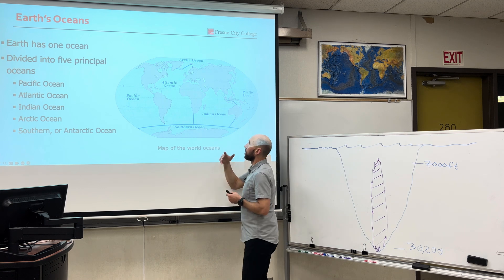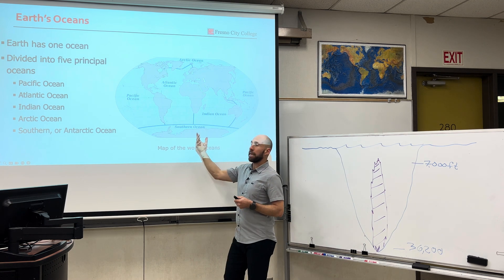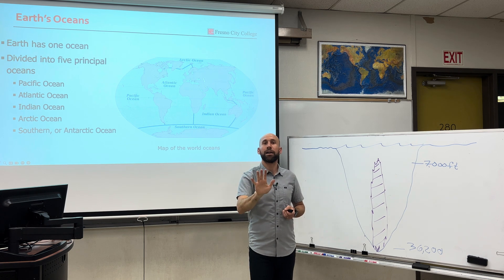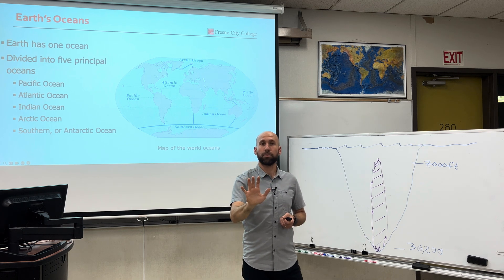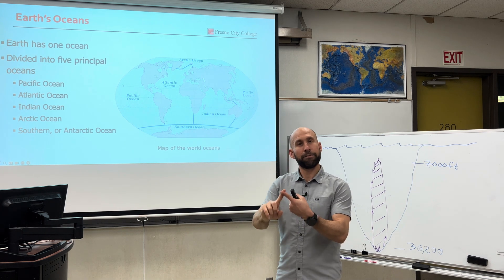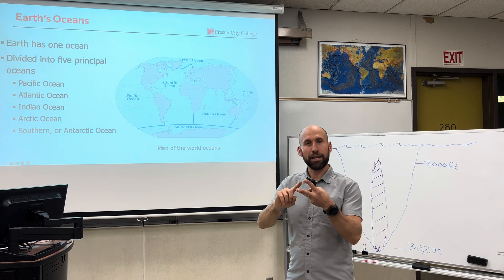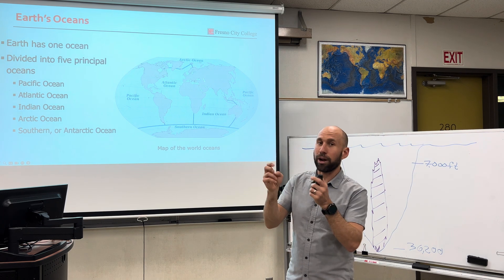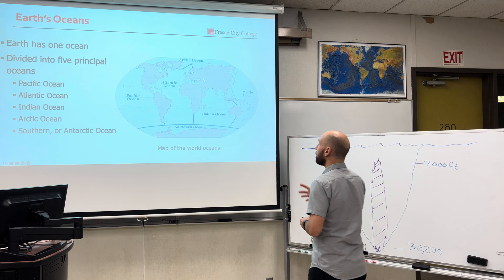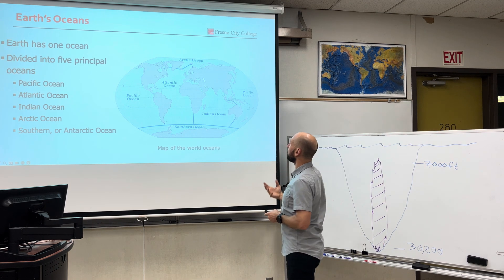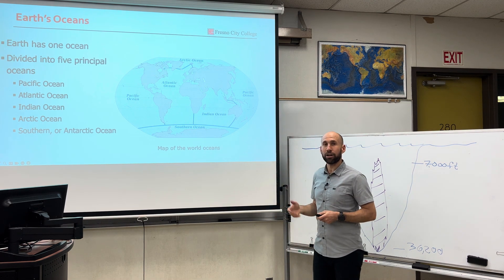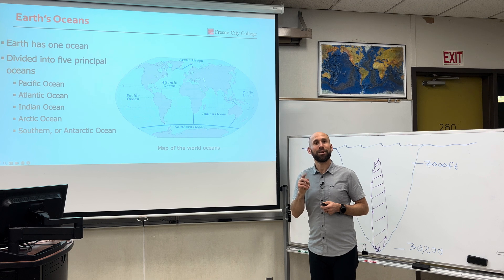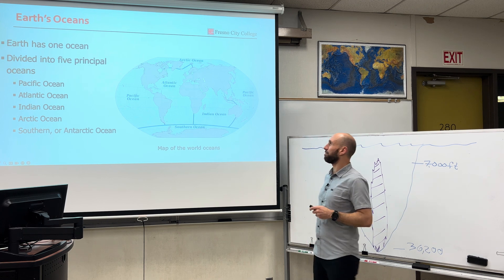So we can divide the world into five principal oceans: the Pacific, Atlantic, Indian, Arctic, and Southern or Antarctic. Each one is unique and has its own characteristics, and I'd like to go through them one by one. Let's do it.